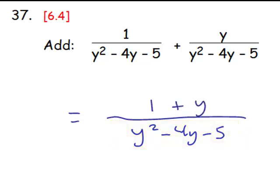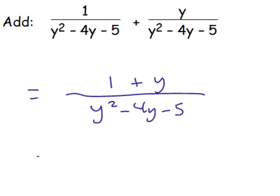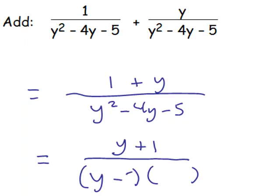We need, though, to factor this to see if we can simplify it all. And the first thing I'd really want to do is to switch the numerator to make it in descending order, y plus 1. The denominator does factor into y minus 5 times y plus 1. And I'll leave that up to you to work out, to verify that.